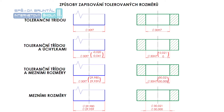Mezní úchylky tolerovaných rozměrů se zapisují toleranční značkou u rozměrů, které je možno kontrolovat pevnými mezními kalibry, to je hlavně při výrobě sériové a hromadné. Toleranční značka se píše za jmenovitý rozměr, stejně velká jako kóta, mezi písmenem a číslicí ve značce se nedělá mezera.